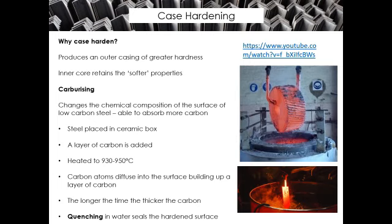This is called case hardening. Case hardening allows you to create a product that has two very important types of properties. You do it so that you can get a casing or outer surface that is very, very hard, but the inner core of the product remains a little bit softer. This means the product can withstand shock and be tougher, so it's not going to be too brittle. This is normally used on low carbon steel where there isn't very much carbon in the product to begin with.